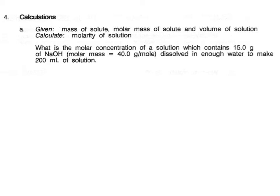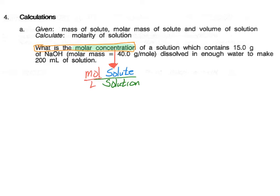Similar to percent calculations, the first step is to decide what type of problem you have. The question says 'what is the molar concentration,' which tells us this is a molarity question. For molar concentration, we know solute is on top and solution is on the bottom — specifically moles on top and liters on the bottom. Since the question asks for the molar concentration, this is a find-the-molarity problem. The question reads: what is the molar concentration of a solution containing 15 grams of NaOH with a molar mass of 40 grams per mole, dissolved in enough water to make 200 milliliters of solution?